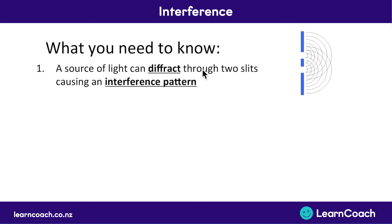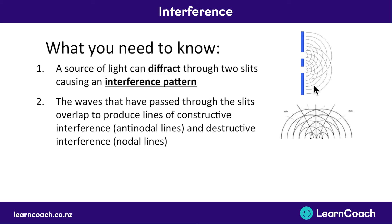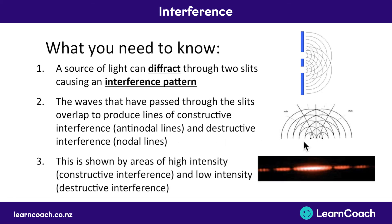Here's what you need to take away from this video. First, a source of light can diffract through two different slits, and this causes an interference pattern. Second, once these waves have diffracted, they overlap to produce lines of constructive interference — antinodal lines — and destructive interference — nodal lines. Constructive interference is shown by areas of high intensity: much brighter if it's light, much louder if it's sound. These dark patches in this diffraction pattern with a laser are areas of destructive interference, where the laser light completely cancels out with itself.